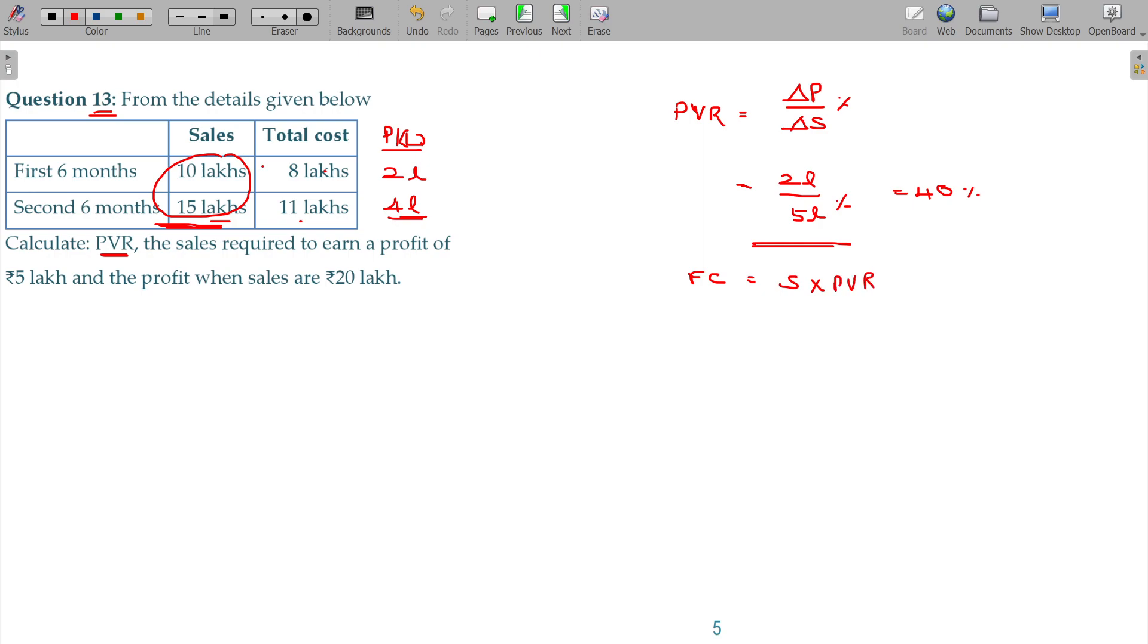Fixed cost using contribution formula: sales into PVR minus profit. You can take any one period as base. First six months: sales 10 lakhs, PVR 40%, minus profit 2 lakhs gives fixed cost 2 lakhs. But this is only for six months, so for the year the fixed cost is 4 lakhs - 2 lakhs per semester, two semesters in a year.